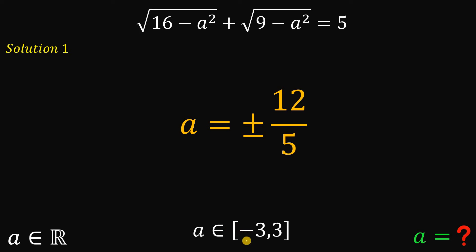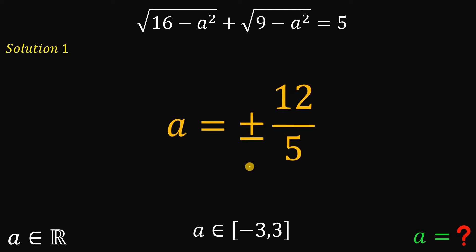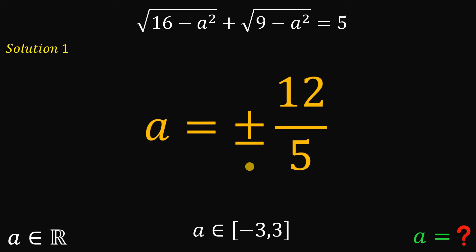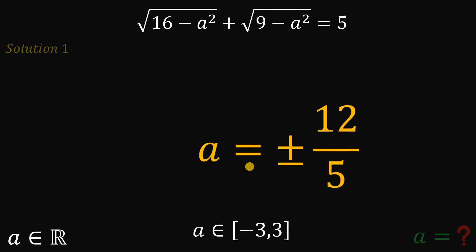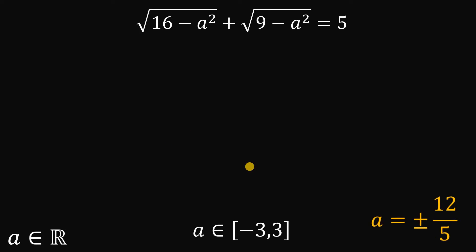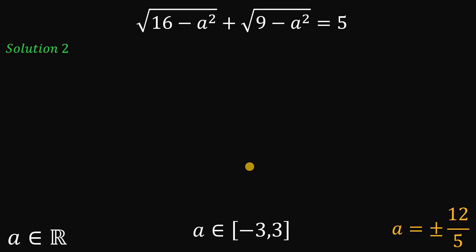Both values are within the valid range of A, which is from negative 3 to positive 3. So A must be equal to positive or negative 12 over 5. This is the legitimate value of A from our first solution, giving us two possible values.